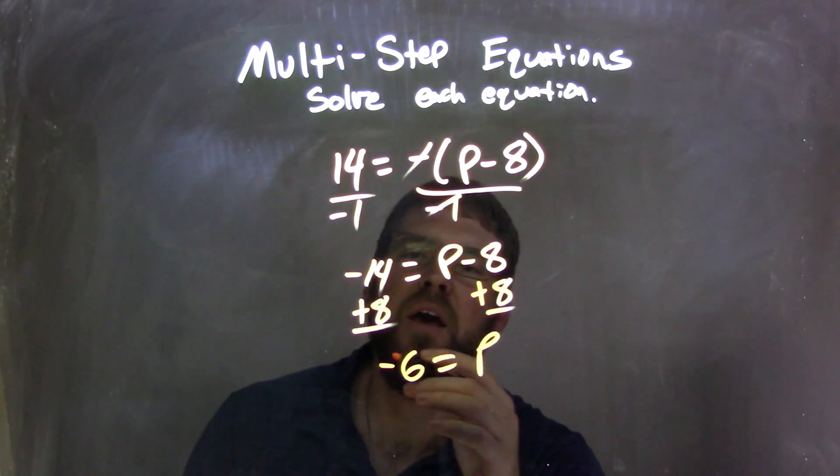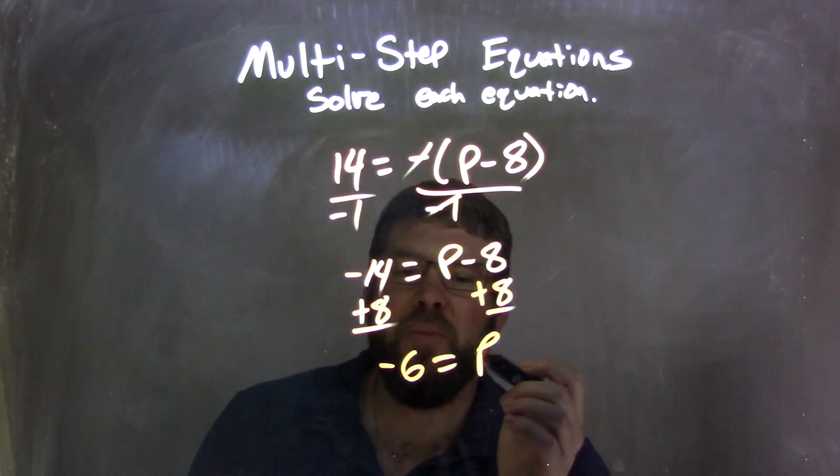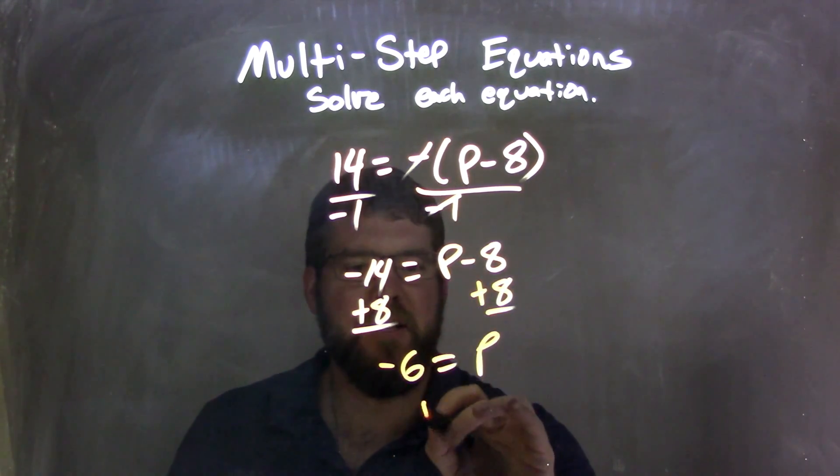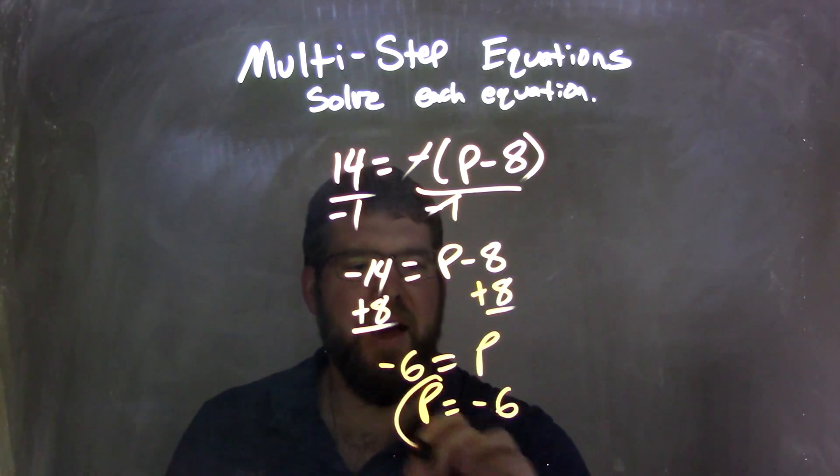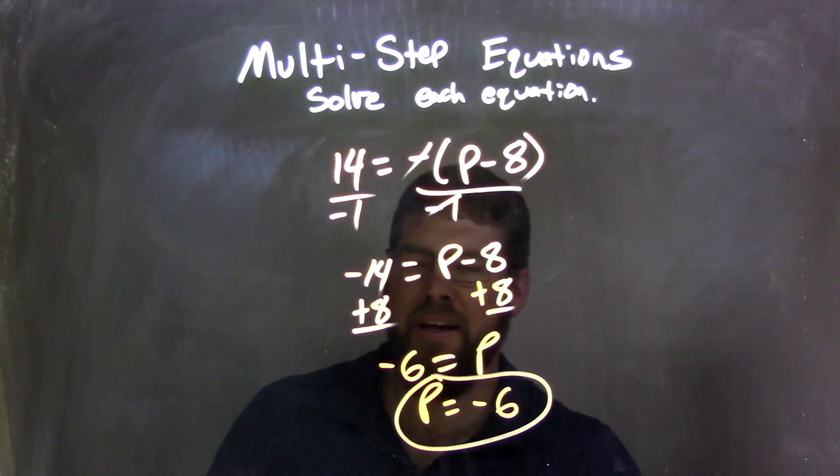So negative 6 equals p. I can rearrange that so p comes first, so p equals a negative 6, and that is my final answer.